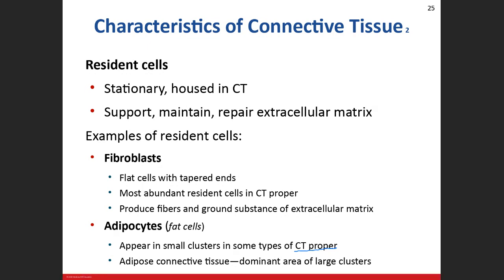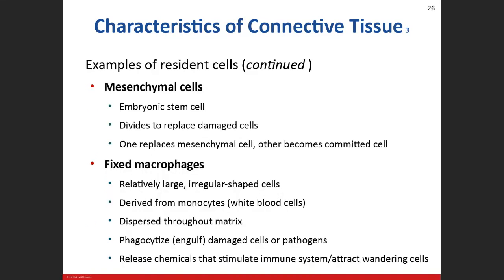Mesenchymal cells are embryonic stem cells. When a connective tissue cell gets damaged, these stem cells divide: one daughter cell replaces the mesenchymal cell, while the second becomes the 'committed cell' — differentiating into whatever damaged cell type needs replacing. This regenerative process is quite useful for tissue repair.